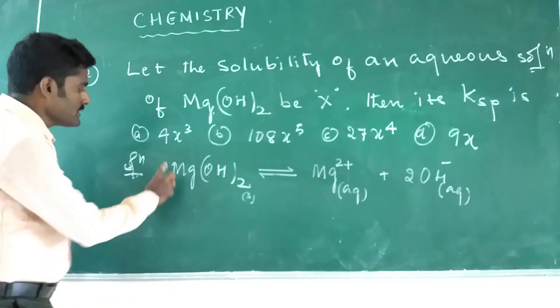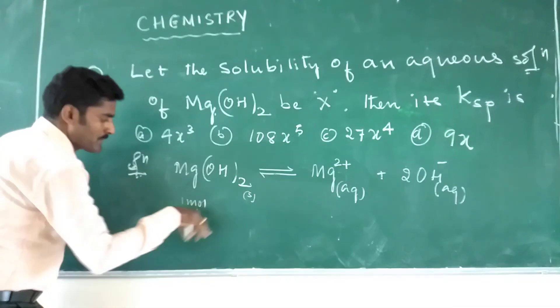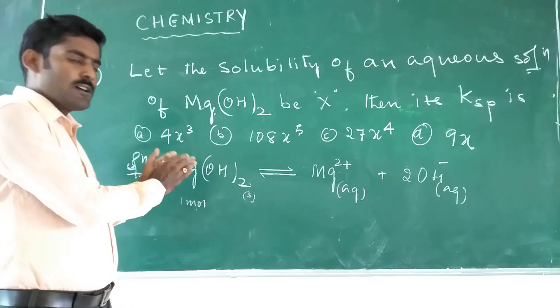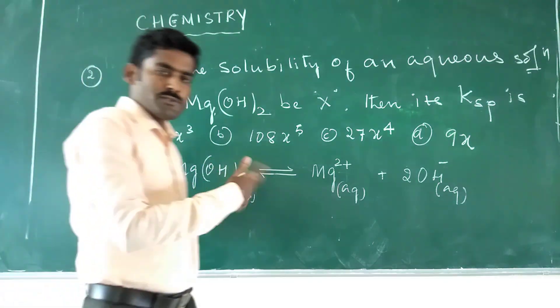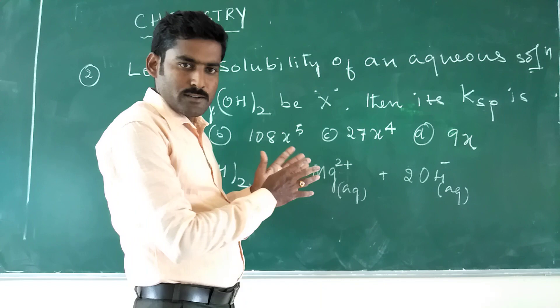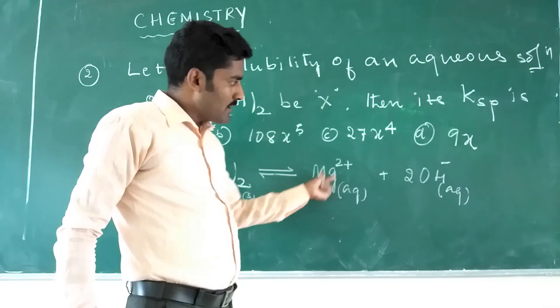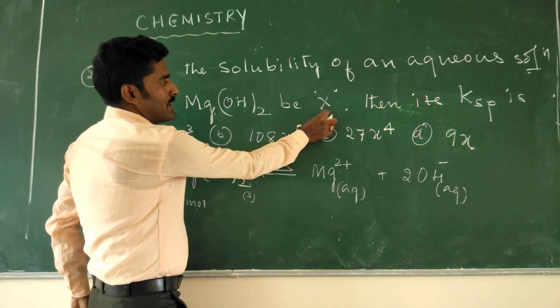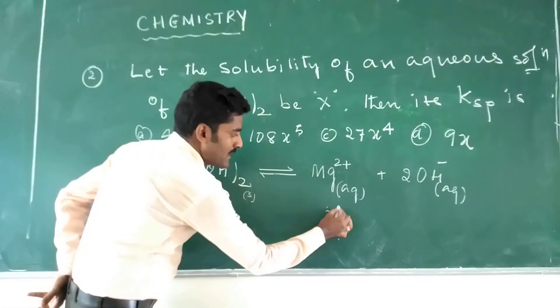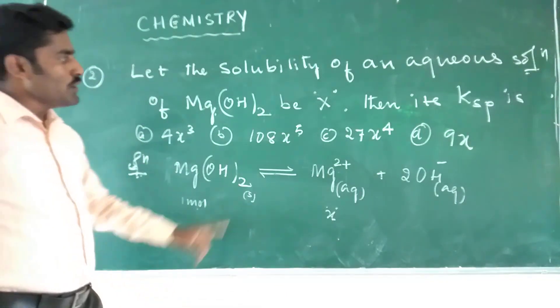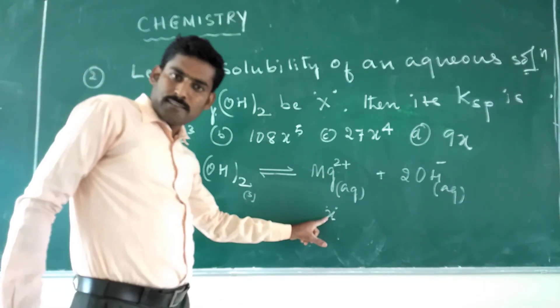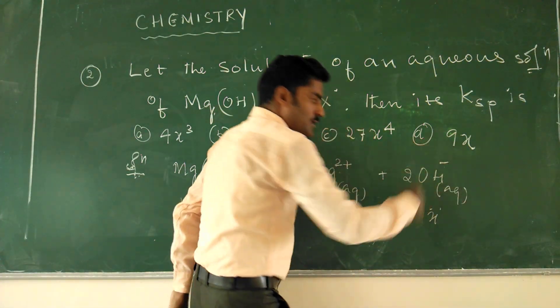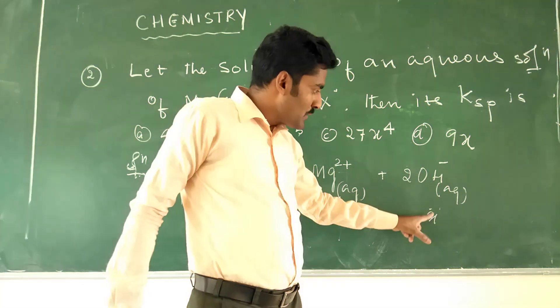So here, suppose if we take one mole of magnesium hydroxide, small amount of salt undergoes dissociation in the presence of water to form magnesium ion and hydroxide ion. Let's consider X, small x, X is the solubility of Mg2+ ion in the solution, and X is the solubility of OH- ion in the solution.